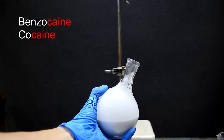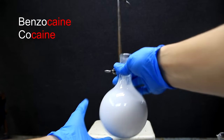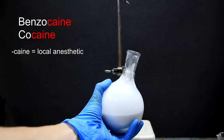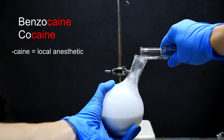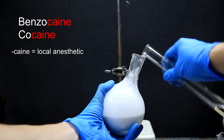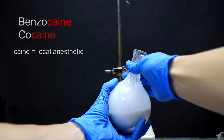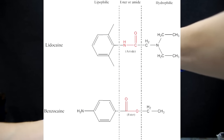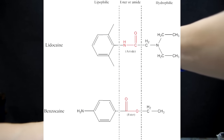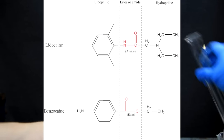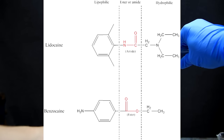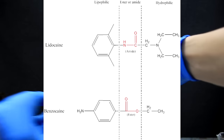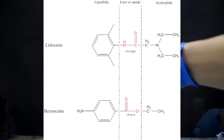You'll probably notice that benzocaine has the same '-caine' suffix as cocaine. However, the only thing that the '-caine' suffix really denotes is that it's a local anesthetic. The structures of local anesthetics are pretty variable, but they all have the same overall design — each local anesthetic has a hydrophilic end and a lipophilic end, which are connected by either an ester or an amide linkage.